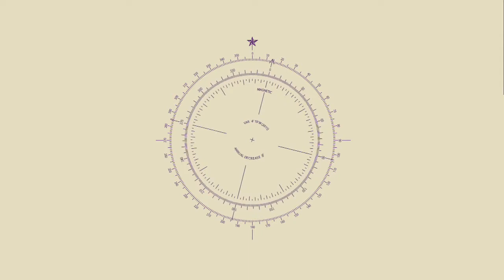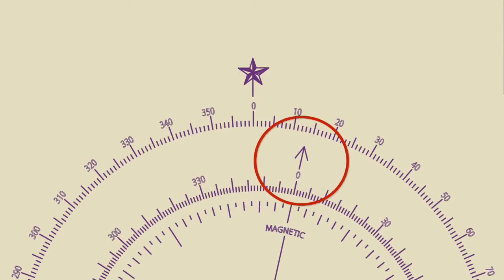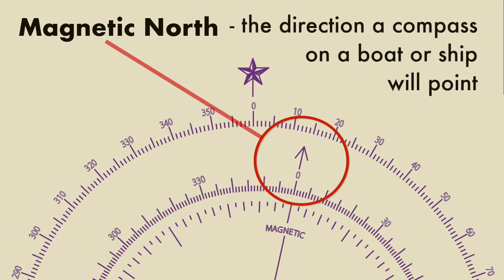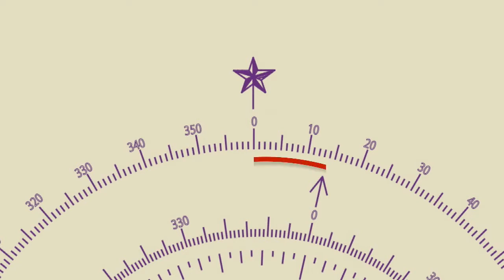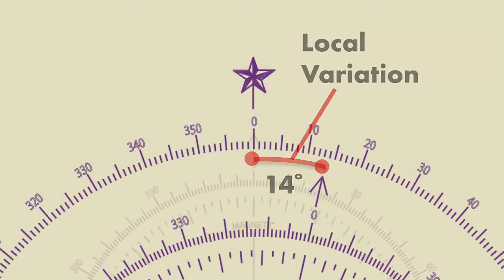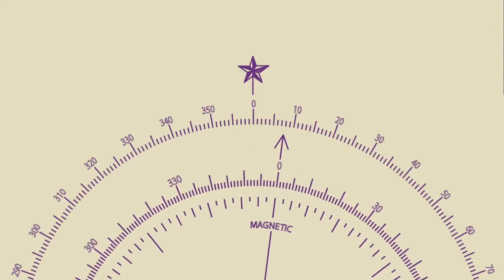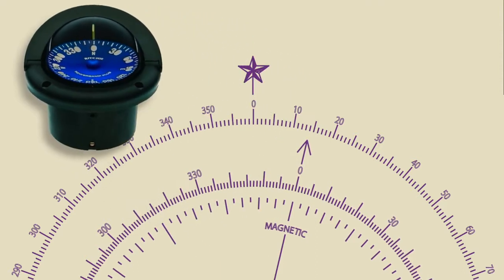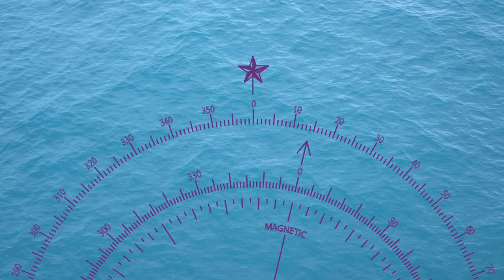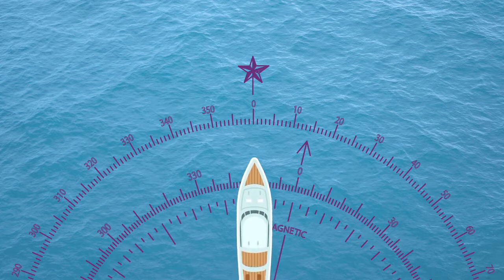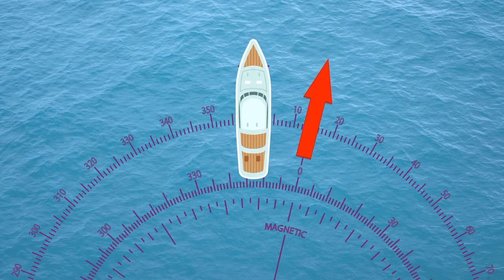Now let's look at the inner circle. Notice that instead of the star, there is an arrow pointing north, but it is offset to the right of the star on the outer circle. This indicates magnetic north, or the direction the compass on your boat or ship will point. How many degrees to the right of the star on the outer circle is the arrow on the inner circle pointing? It's about 14 degrees to the right. That 14-degree difference between magnetic north and true north is known as local variation. This variation will change from place to place around the world, so navigators using magnetic compasses aboard their ships or boats will need to know the variation in the area they are sailing so they can steer the correct course. If a navigator does not adjust their course according to the magnetic variation, he or she could miss their destination by hundreds of miles on the open sea.